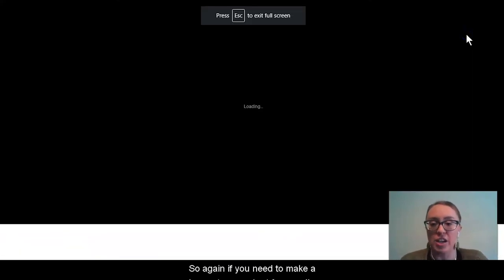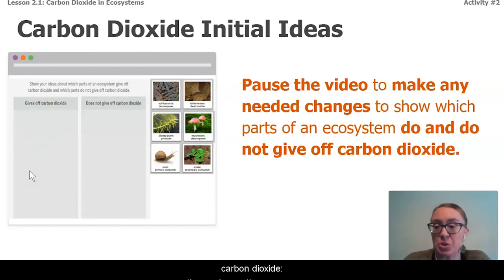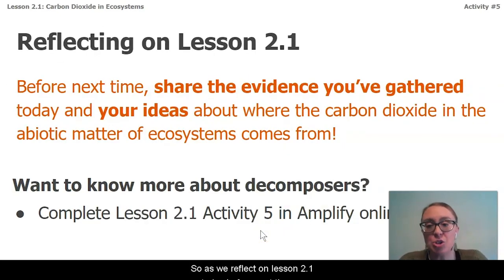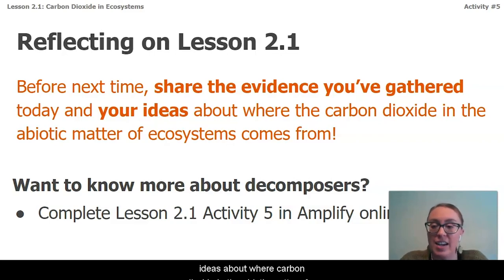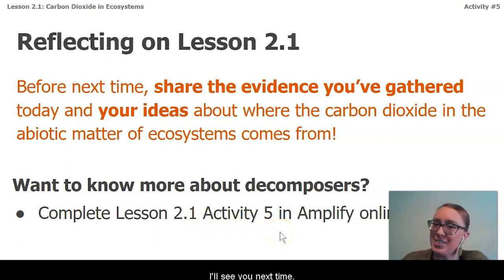If you need to make a change to your chart from earlier, go ahead and do that. Pause the video to make any needed changes to show that all parts of an ecosystem do give off carbon dioxide — the producers, the consumers, and the decomposers alike. As we reflect on lesson 2.1 today, share the evidence you gathered and your ideas about where carbon dioxide in abiotic matter in ecosystems comes from. If you want to know more about decomposers, complete Activity 5 in Amplify online. I'll see you next time.